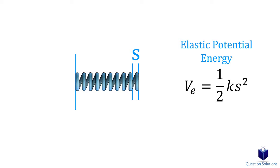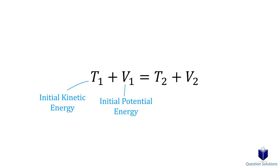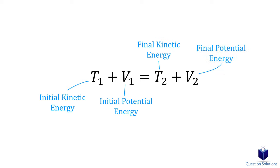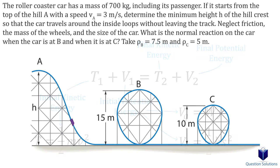And now for the big equation, which is called the conservation of energy equation. We have the initial kinetic energy plus the initial potential energy of a particle, which is equal to the final kinetic energy plus the final potential energy. Kinetic energy is half times mass times velocity squared. The potential energy is either gravitational potential energy or elastic potential energy. Now we can start doing some examples to figure out how to use this equation.